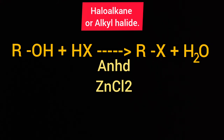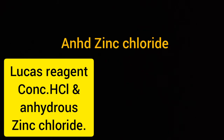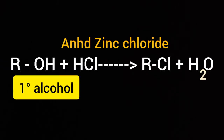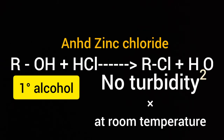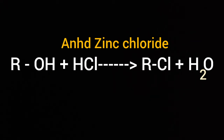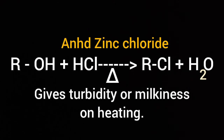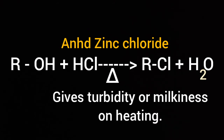There are three types of alcohol: primary alcohol, secondary alcohol, and tertiary alcohol. Primary alcohol on treatment with Lucas agent gives no turbidity at room temperature. However, it gives turbidity or milkiness if the reactants are heated. On heating, primary alcohol gives turbidity.